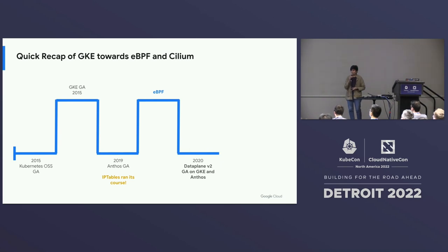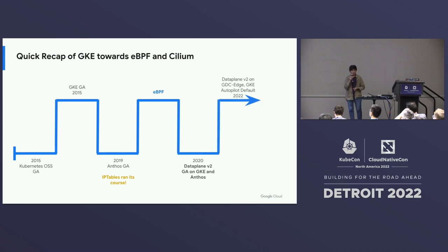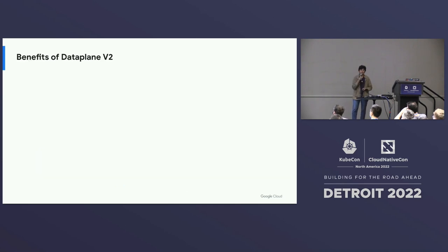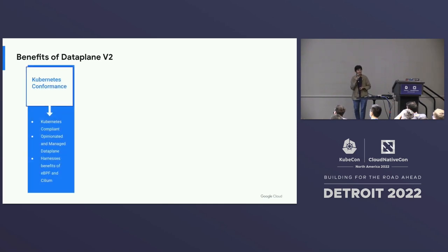It has been a great journey. We have been running Dataplane V2 on GKE, and made it generally available for Anthos and our newer platforms — Google Distributed Cloud, GDC-Edge, and GDC-hosted. It's now the default on Autopilot, our flagship GKE offering. Our fleet is rapidly migrating automatically to Dataplane V2. Since then, we have launched a lot of new features, and I'm going to cover some of the benefits our users have seen.